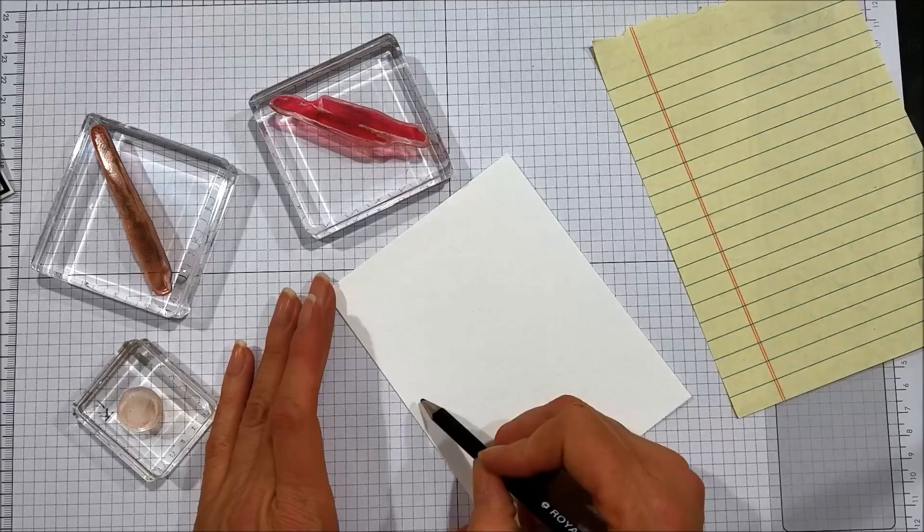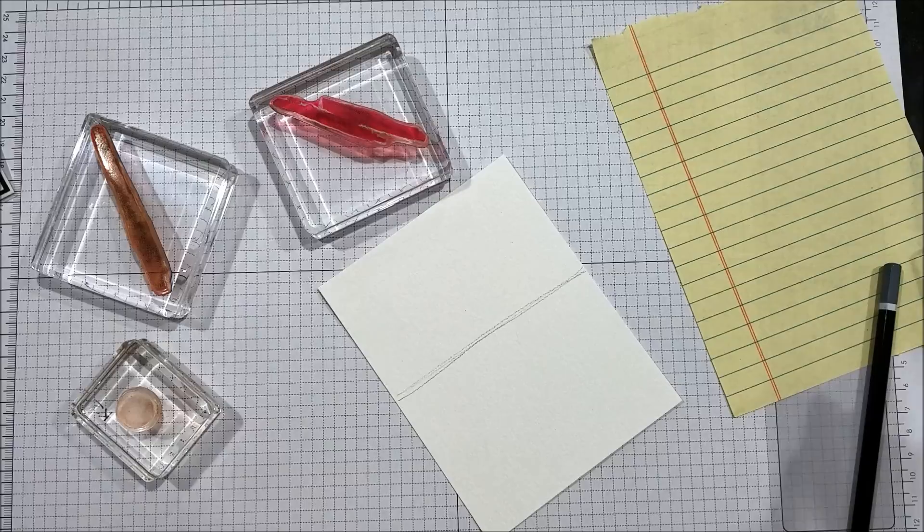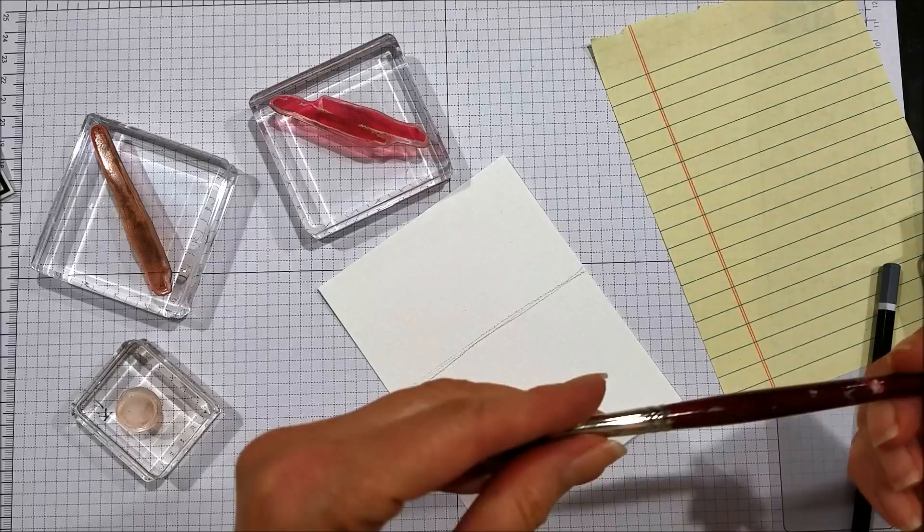So the first thing I normally do is decide where I want my horizon line to be, and I just take an ordinary pencil and draw a line across it. It doesn't have to be fancy.